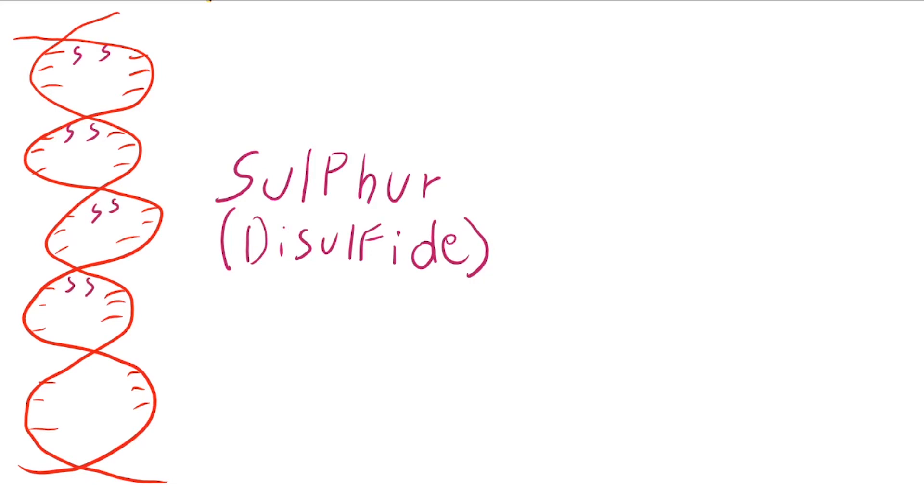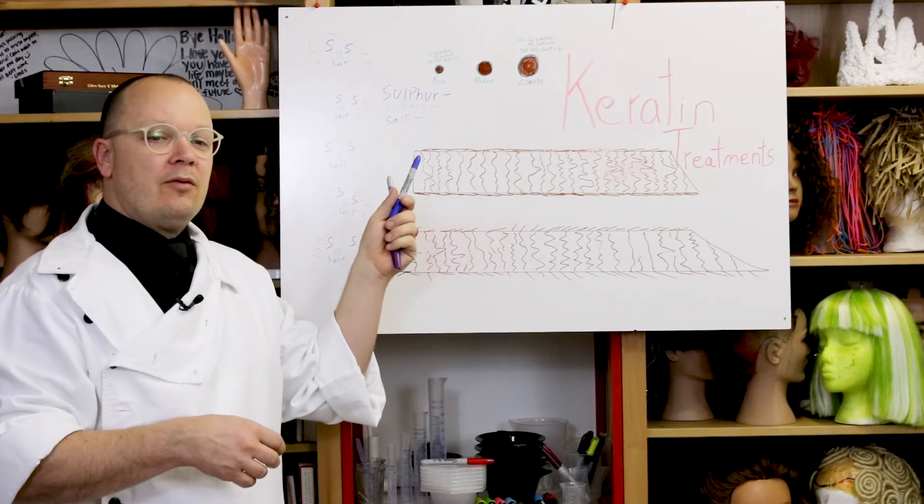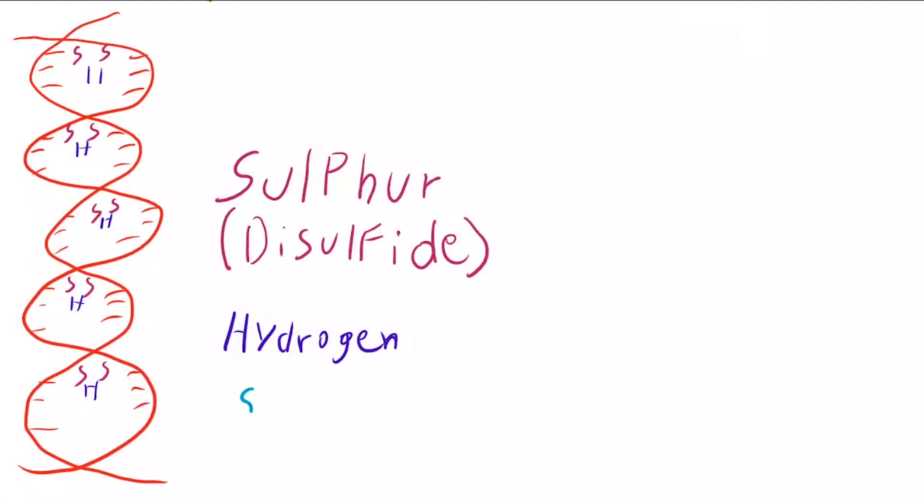Then our other two bonds that we're dealing with are a hydrogen bond, big H for hydrogen, and then there's a salt bond. There are lots of different kinds of salts out there. The main one that we're going to be concerned with and that I think most of us can readily identify is sodium chloride. Na is sodium, Cl is chlorine, hydrogen is H, sulfur is S.